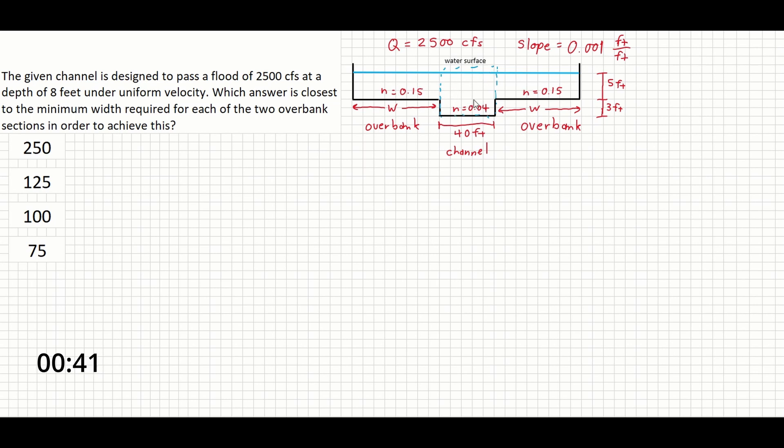The problem is asking us to find how much width each overbank needs to be to pass the total flow required. So the first thing we would need to do is find the amount of flow that just the channel itself can pass.